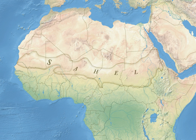The Sahel part of Africa includes parts of northern Senegal, southern Mauritania, central Mali, northern Burkina Faso, the extreme south of Algeria, Niger, the extreme north of Nigeria, central Chad, central and southern Sudan, the extreme north of South Sudan, Eritrea, Cameroon, Central African Republic, and the extreme north of Ethiopia. Historically, the western part of the Sahel was sometimes known as the Sudan region, roughly located between the Sahara and the coastal areas of West Africa.